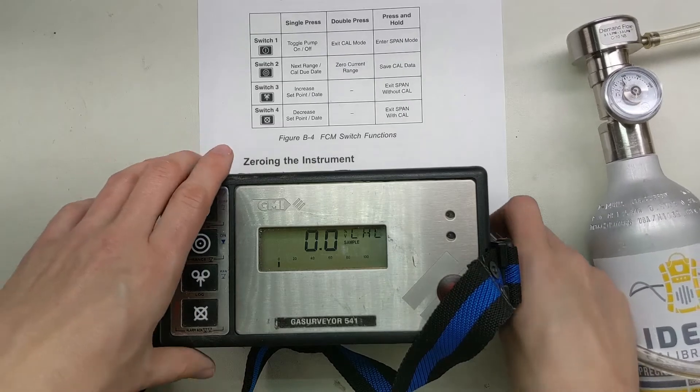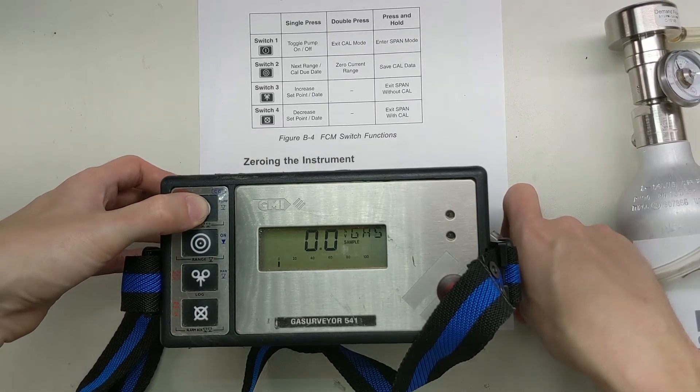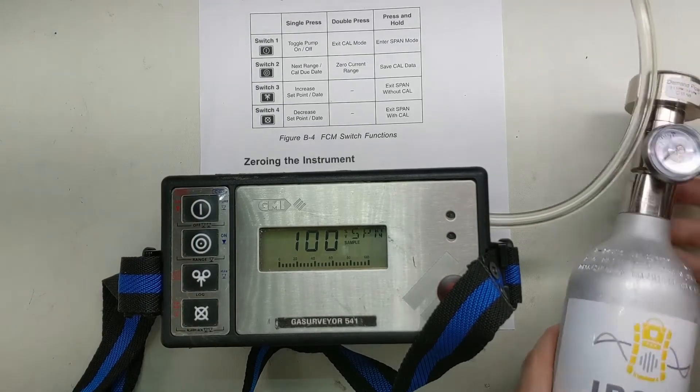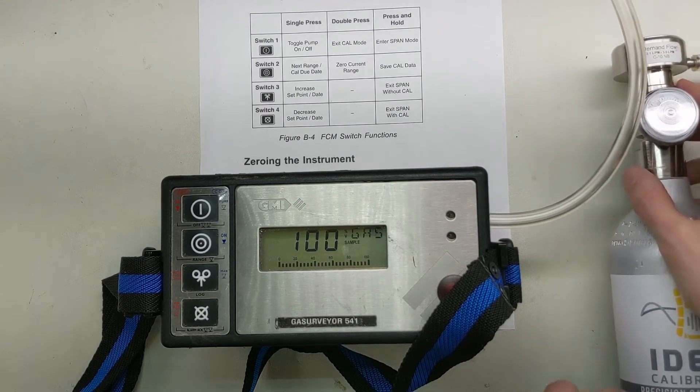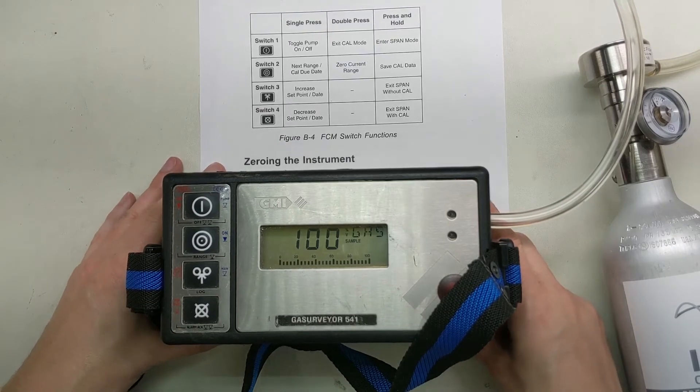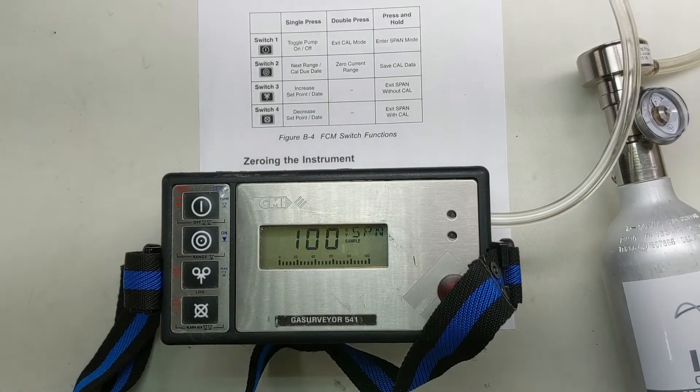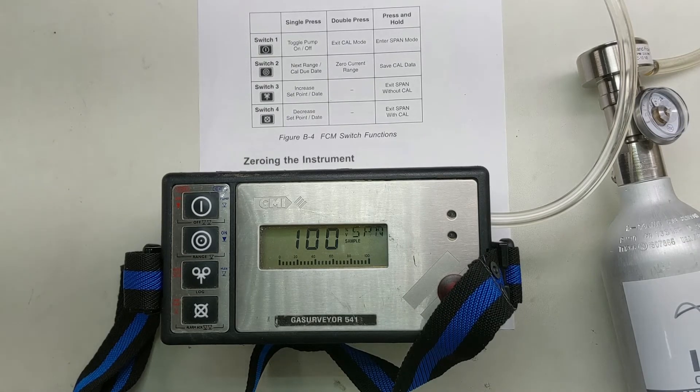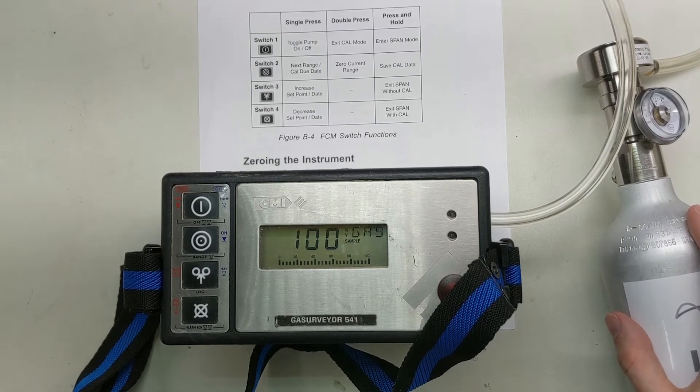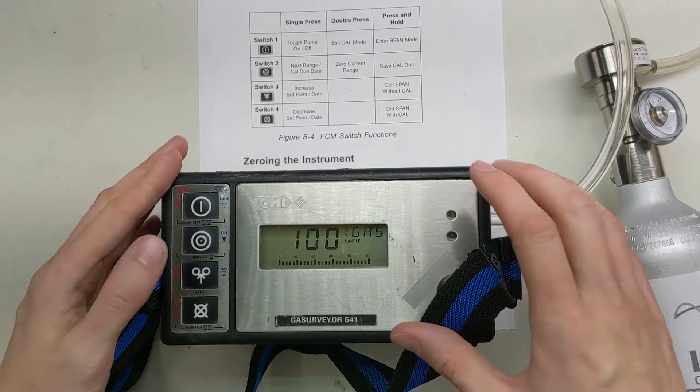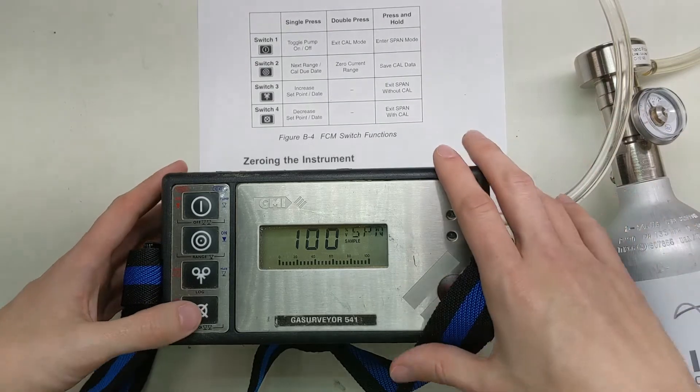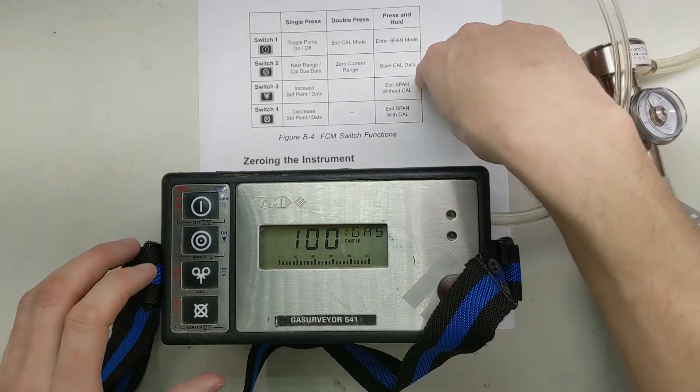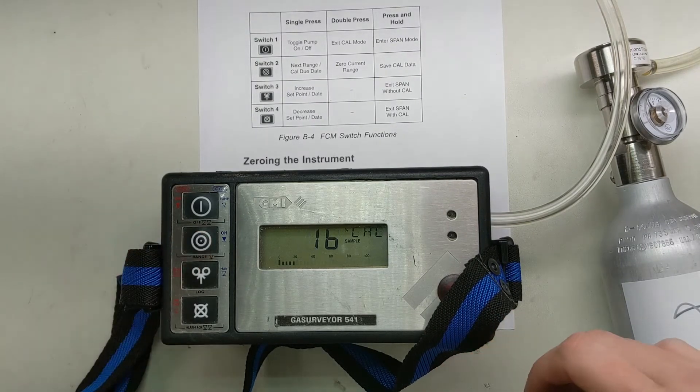Now we're going to go ahead and enter span mode. Press and hold the button here. Now it's looking for a 100 gas. I'm going to put this on here. This sensor is a little different than the LEL sensor. It's called a TCD, thermal conductivity detector. It reacts a little bit quicker. So we don't have to wait as long. What we're going to do, exit span with Cal. Now it's showing 99 and 100 for our reading. Perfect.